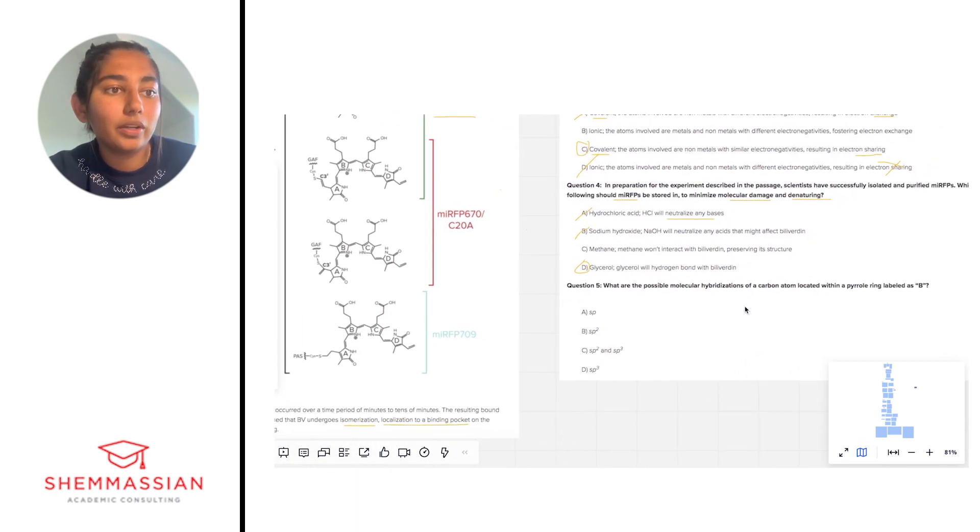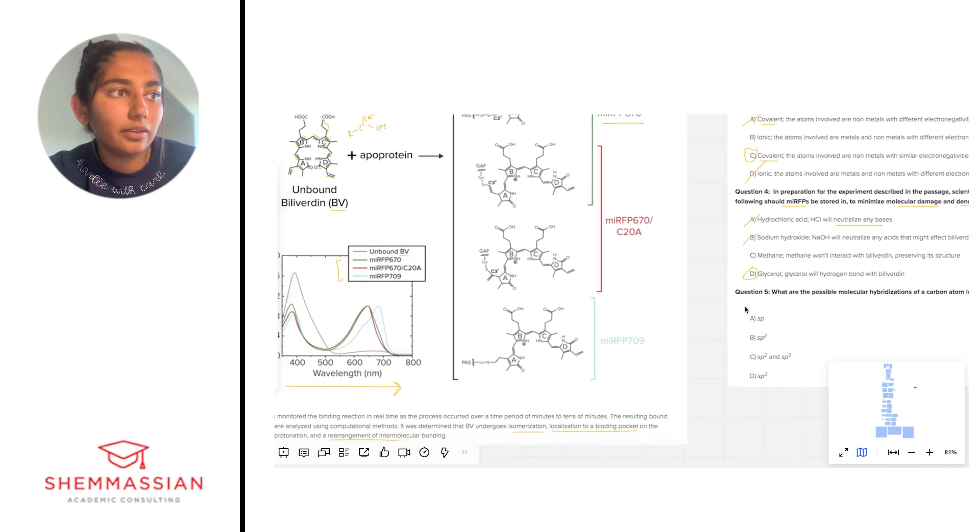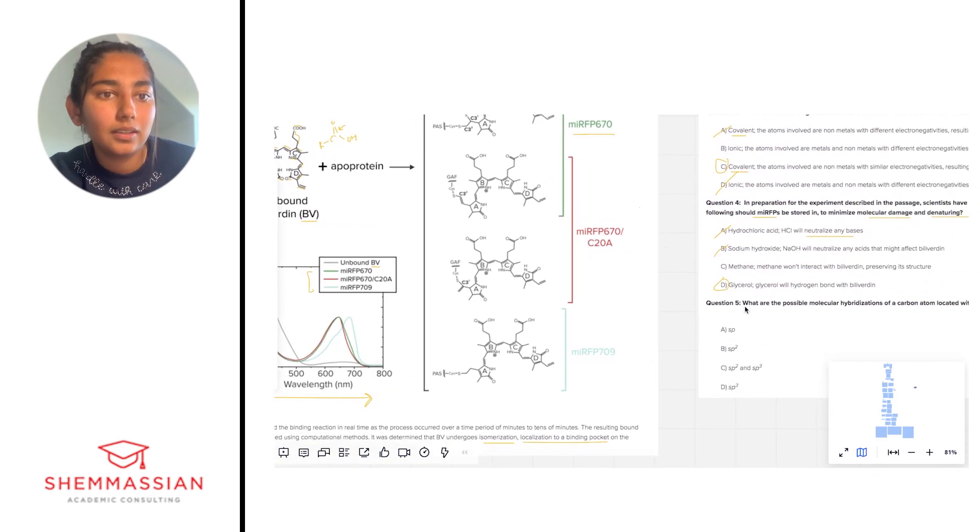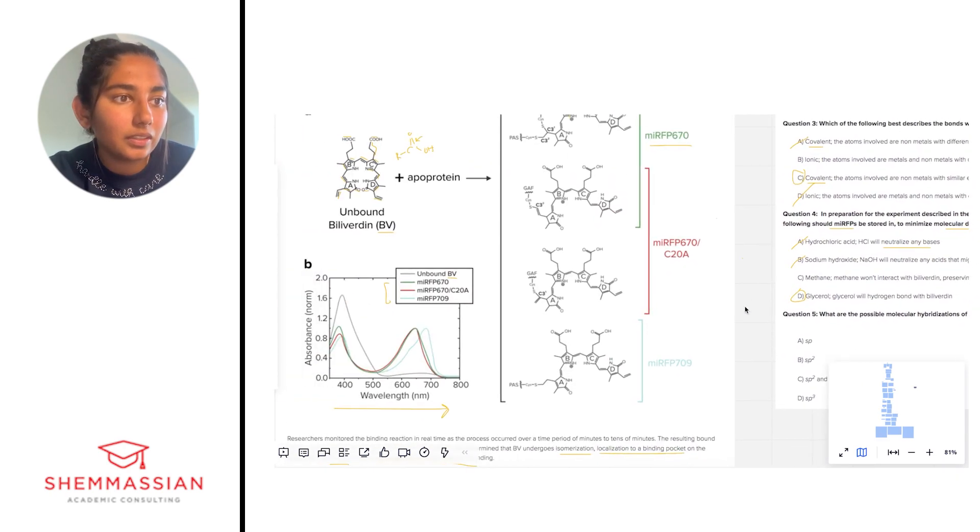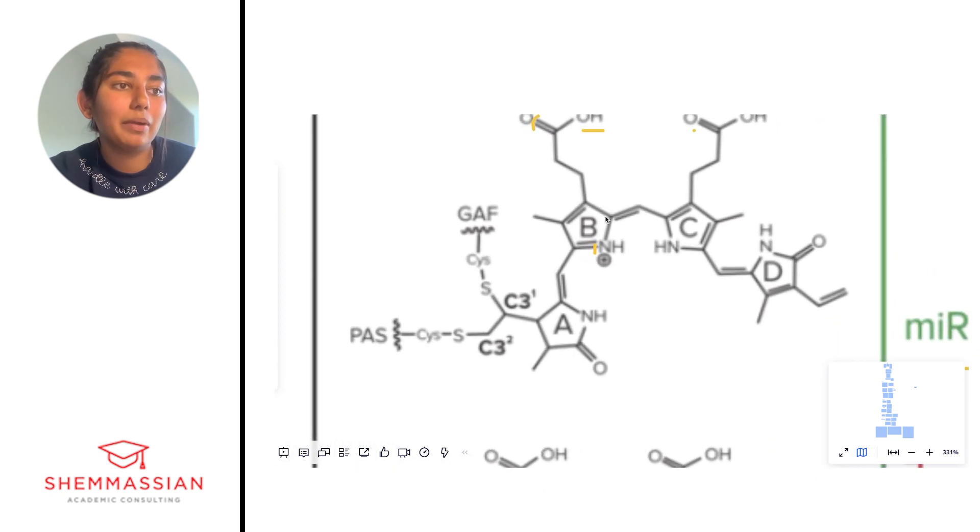Finally, number 5: What are the possible molecular hybridizations of a carbon atom located within a pyrrole ring labeled as B? Let's take a look at it and we see that it is an aromatic ring. We have a carbon right here. It is bonded to how many things? One thing here, two things here, three things. It's bonded to three things.